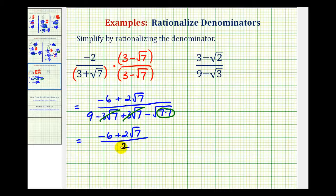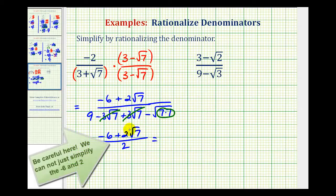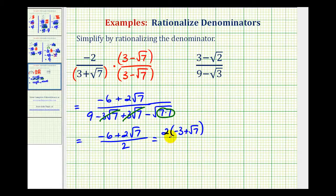Now we're not quite done yet because the numerator and the denominator do share a common factor of two. So we'll go ahead and factor a two out of the numerator. We'd have two times the quantity negative three plus square root of seven, all over two. Here we have two over two which simplifies to one, so finally we have negative three plus square root of seven.